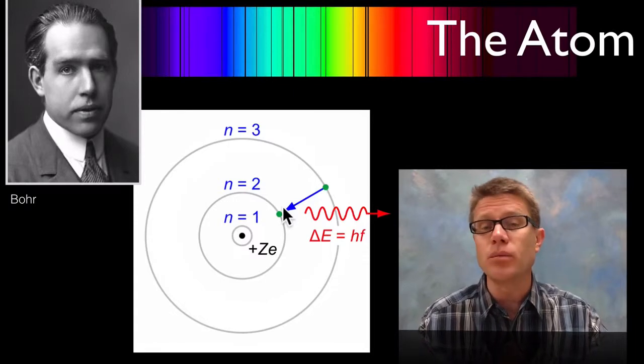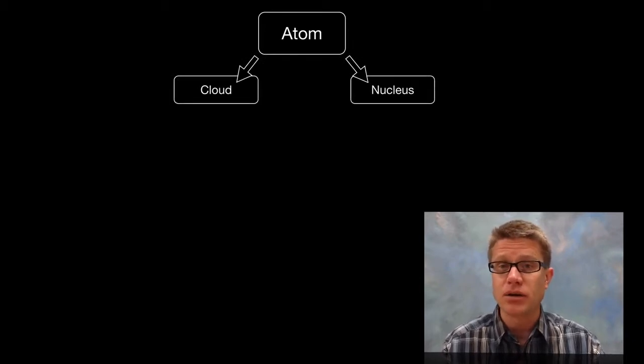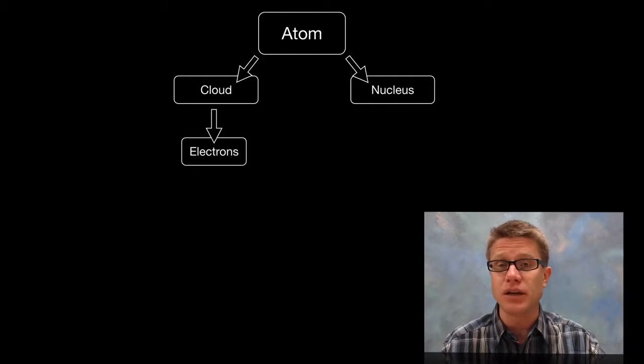And that helped to describe what we were seeing in the spectra. And so that improved our model. So we now had the cloud that had the electrons in it, and then the nucleus. And so we found these negative electrons in the cloud.